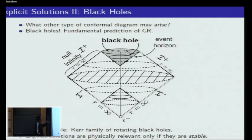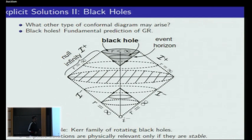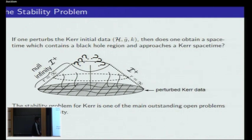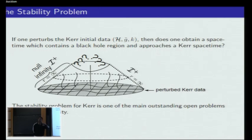We have specific explicit solutions to the Einstein equations which have exactly this kind of black hole picture, and we want to understand the stability properties in the context of the initial value problem described earlier. We want to know if black holes are stable or not. The main example for which we want to understand stability is the so-called Kerr family of rotating black holes, which has two parameters: the spin parameter and the mass parameter.